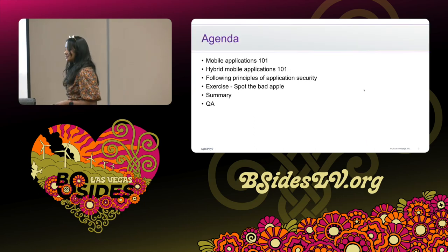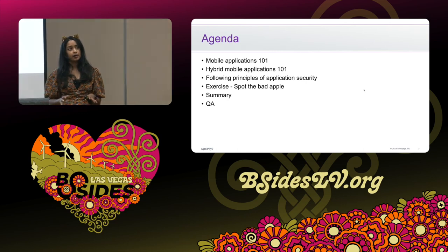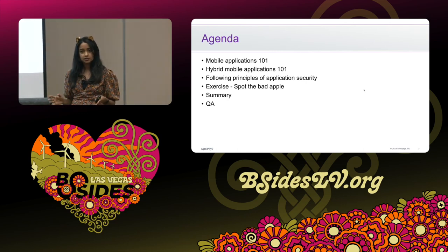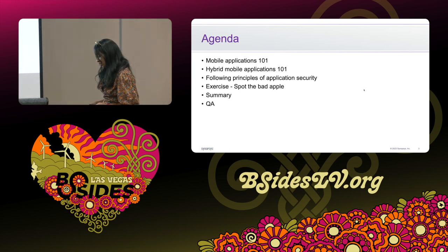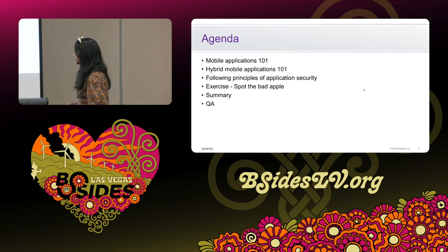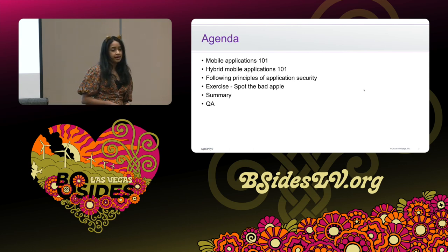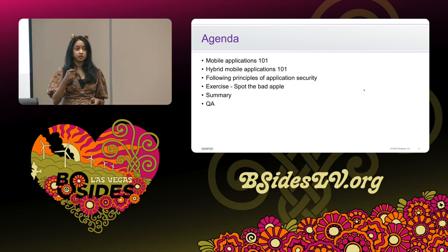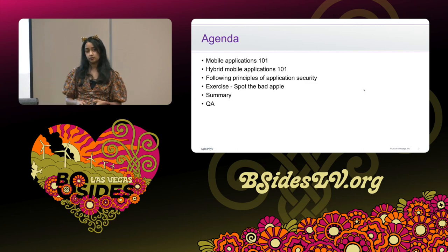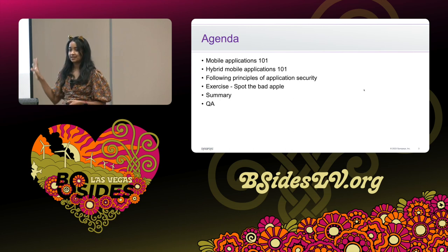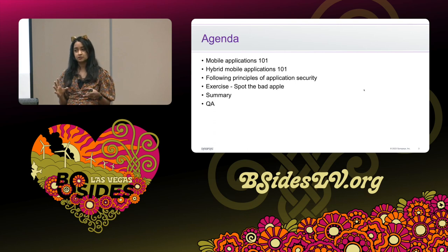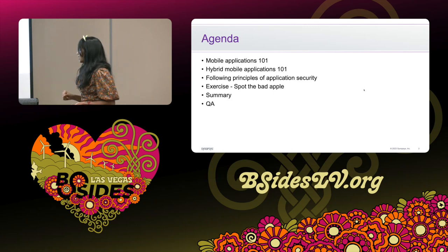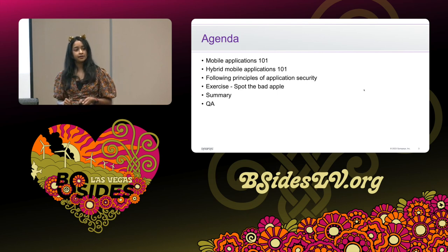In today's session we're first going to set the foundation and talk about some basic concepts about mobile applications — their characteristics, what they're made of, what their threat model is like, and how it differs from a web application. Then we'll go over principles of application security and see how you can use them to build hybrid mobile apps securely. At the end I have a fun interactive exercise where I'll show insecure code and give goodies to those who correctly identify the insecure line.